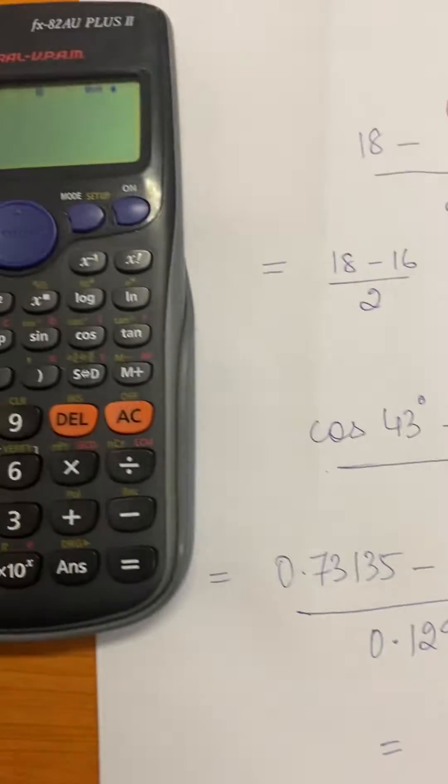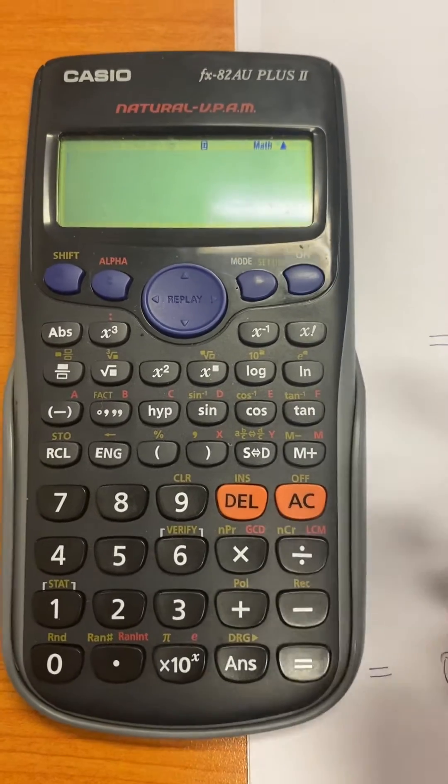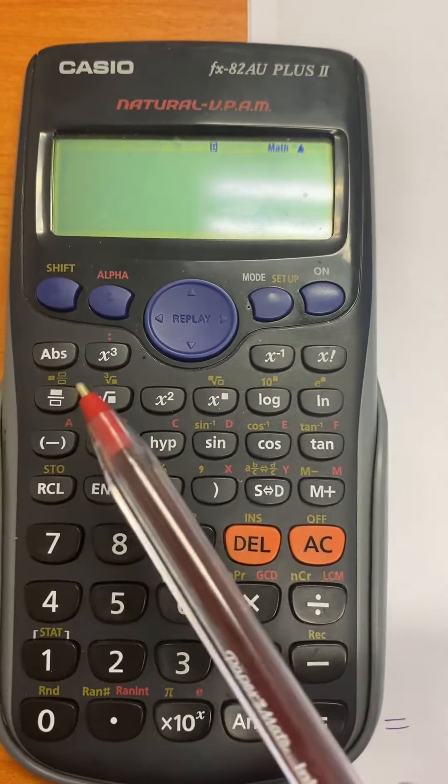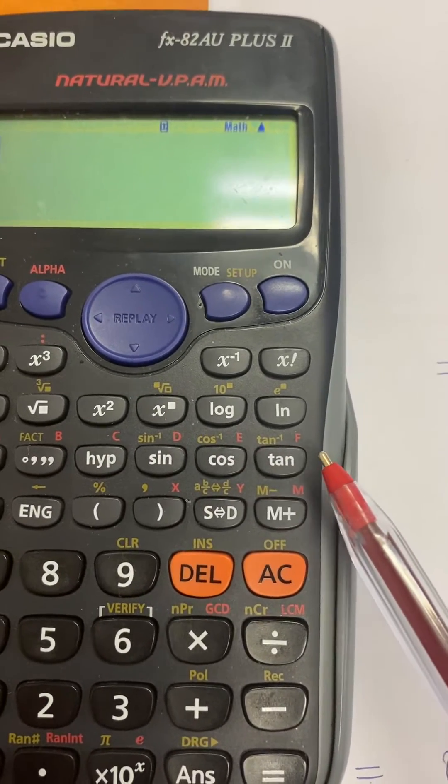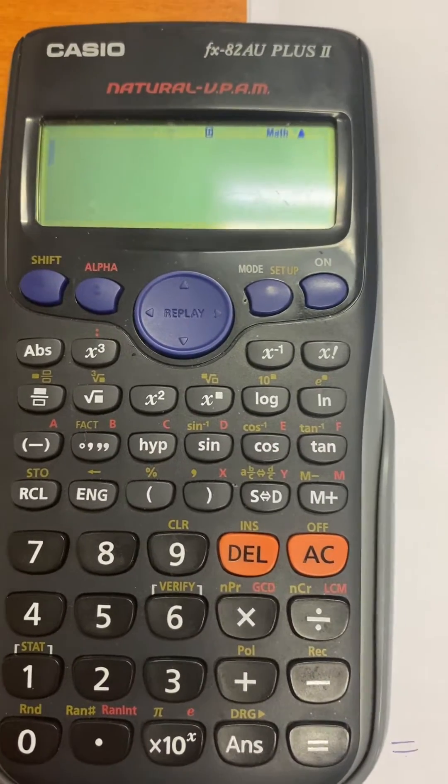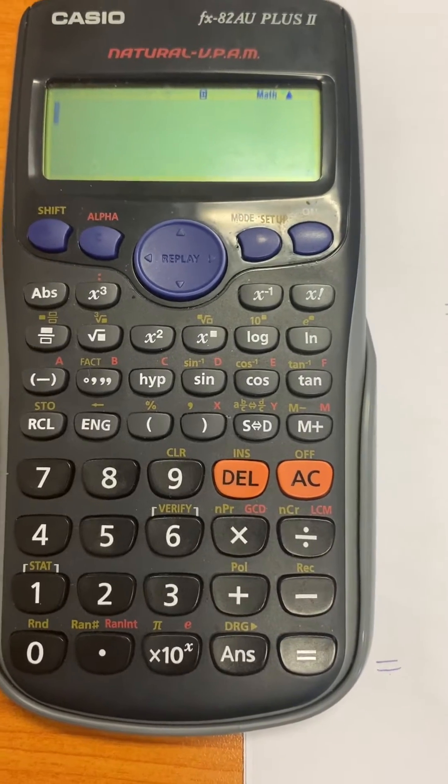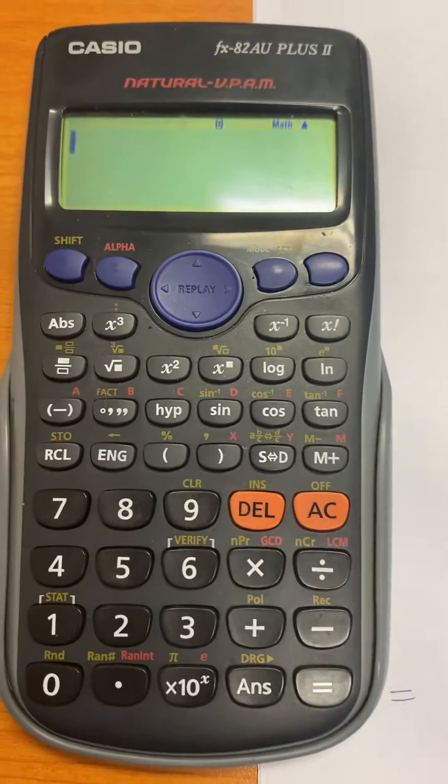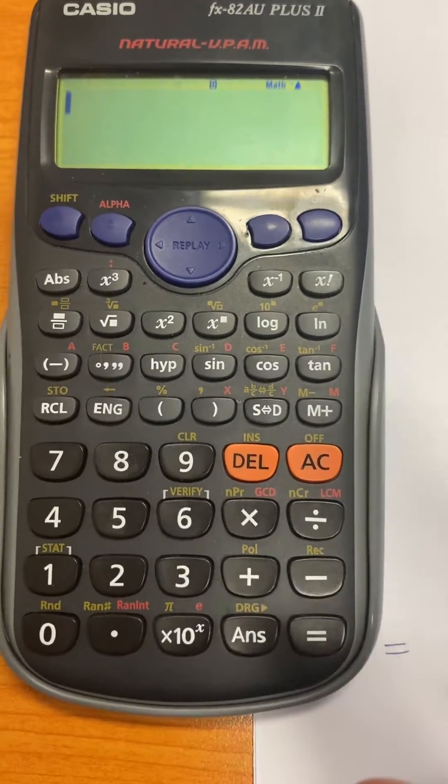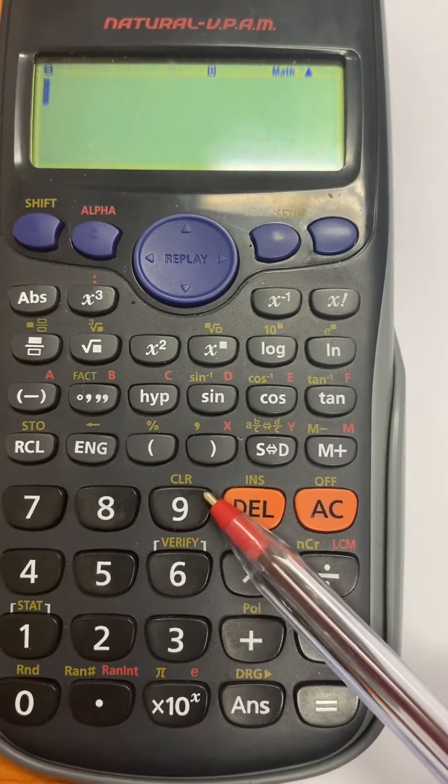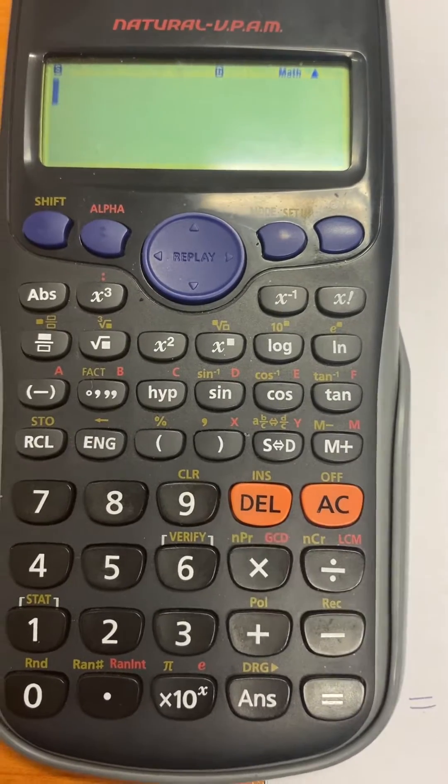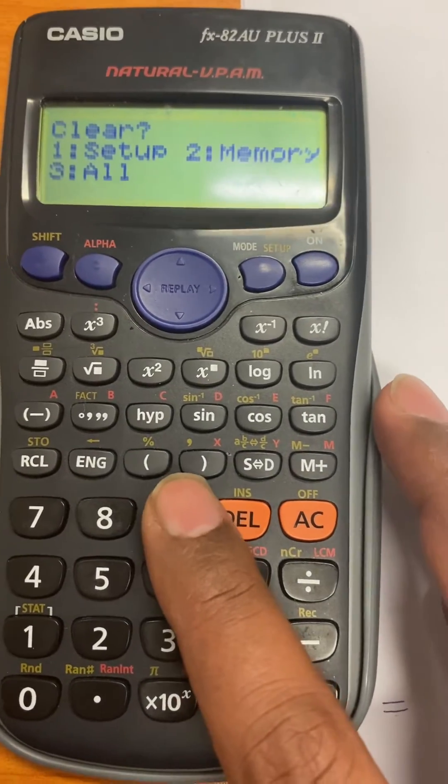But before I do that, I will show you how you can clear the calculator as well, because you can see there are only six letters here, A, B, C, D, E, F, that you can save the numbers by. So now if you think your calculator is getting full and you have to clear the memory, otherwise it will always be stored in your memory, all you have to do is press shift here and then press the button number 9 which has clear written on top of it.